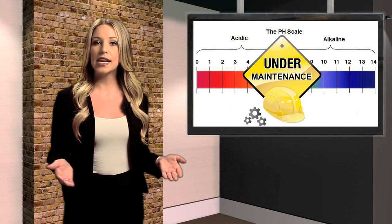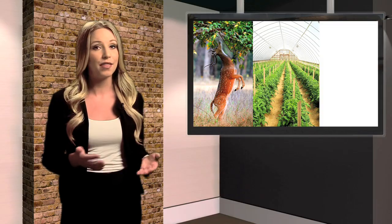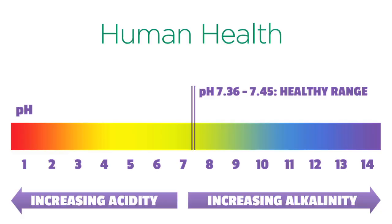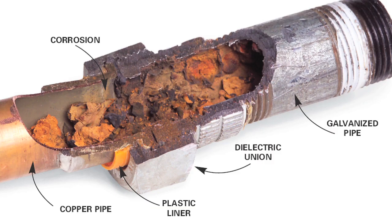The maintenance of a desired pH range is important for living organisms, agriculture, industry, and the environment. For example, human health depends on blood pH being within a narrow range. Plant growth can be severely affected if the pH of soils, rivers, and lakes is too high or too low. Metal items like steel pipes and pumping equipment can be corroded quickly if they carry acidic water.